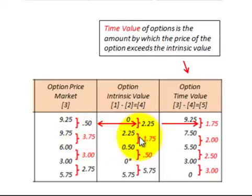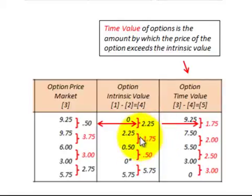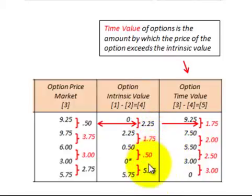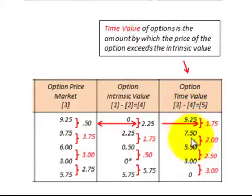You continue subtracting the change in intrinsic value from the change in market value. In the next period, we had a negative change of $3.75 in market value, subtract the negative change of $1.75 for intrinsic value, and the change in time value is negative $2.00. Subtracting negative $2 from the beginning amount of $7.50 gives $5.50. The time value started at $9.25 and at the expiration date the time value was zero — it had no time value remaining.